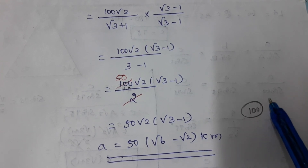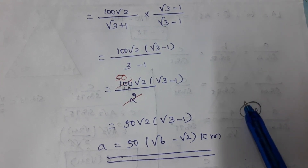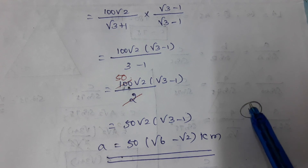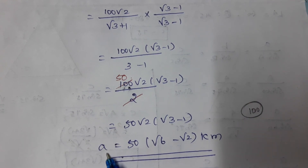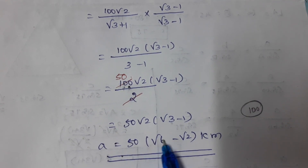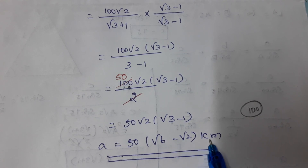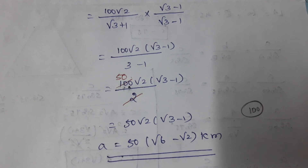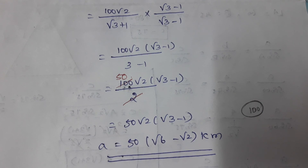Note: the book answer of 100 km is incorrect. The correct answer is A = 50(√6 − √2) kilometers. Thank you for watching this video. In the next class we will discuss the remaining solutions. Have a great time!